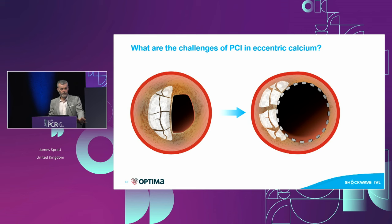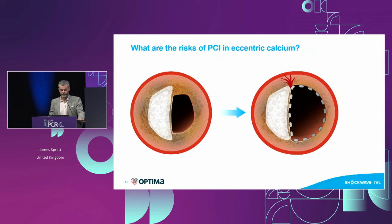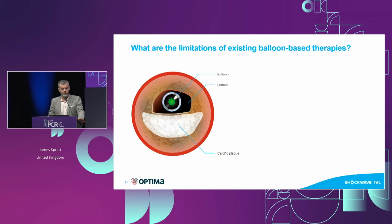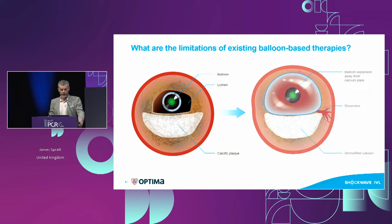What are the challenges in eccentric calcium? We want to convert calcium into nice little fractures so we can expand our stent safely — not risk incomplete stent expansion or vessel perforation. Up to now, we've had very few ways of doing that. Balloon-based therapies apply only concentric force. If you apply concentric force to an eccentric load, the balloon expands away from the calcium and into the adventitia, risking tears or perforations.